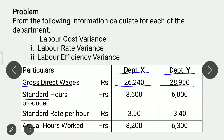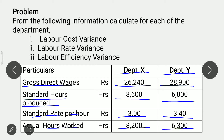Standard Hours Produced: for Department X, 8,600 hours, and for Y, 6,000 hours. Standard Rate per hour: for Department X, Rs. 3, and for Y, Rs. 3.40. Actual Hours Worked: for Department X, 8,200, and for Y, 6,300.